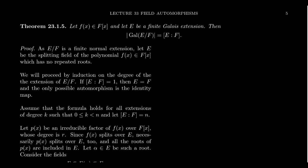The proof goes as follows. Since E over F is a finite Galois (normal) extension, E is the splitting field for some single polynomial. For a finite extension, we attach only a finite number of roots to F to form E. So even if we started with an infinite collection of polynomials, we can take the minimal polynomials of those elements over F and their least common multiple to get a single polynomial F(x).